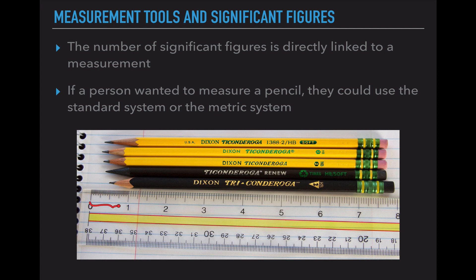If you notice, in this first inch there are lots of individual little lines in between the bigger lines. Between the first and the second inch, those lines go away, so this first inch gives us a more accurate measurement. Now if we look down at the centimeters, we always have those itty-bitty individual lines. So meters and centimeters are more accurate measurements because they have more measurement lines to compare to than measuring in inches.